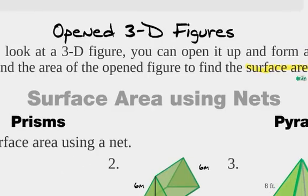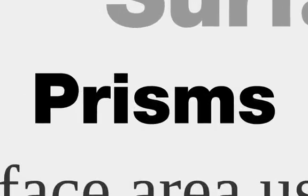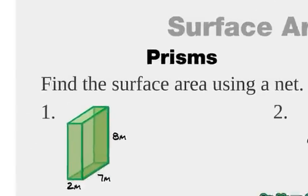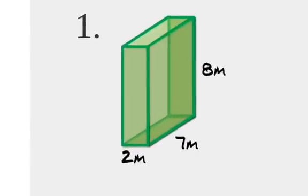All right, so let's find surface areas using nets. Let's start with prisms. Let's find surface area using a net with this guy. Can you imagine what this rectangular prism would look like if we unfolded it? Kind of use your mind's eye there and imagine taking this guy apart. What do you think it would look like? All right, why don't you try and draw it?